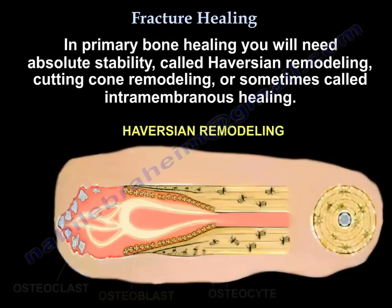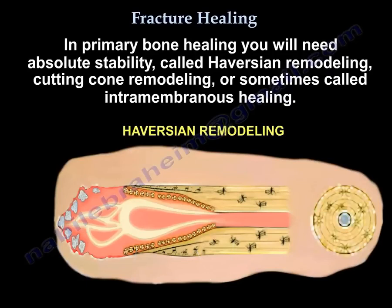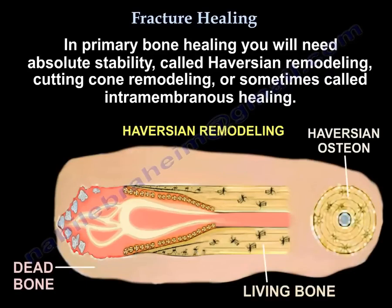In primary bone healing you will need absolute stability. It is called Haversian remodeling or cutting cone remodeling. Sometimes it is called intramembranous healing.